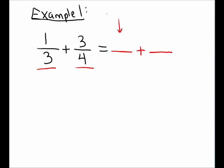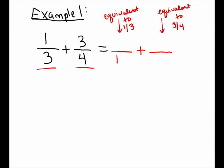In this place, I'm going to write an equivalent fraction to 1/3, and over here I will write an equivalent fraction to 3/4. But I need these two fractions to share a common denominator. I look at 3 and 4 and ask: what is the least common multiple of these two values? Both 3 and 4 multiply into 12, so that will be my common denominator. I need an equivalent fraction for 1/3 that has a denominator of 12. I notice that to change 3 into 12, I multiplied the 3 by 4.